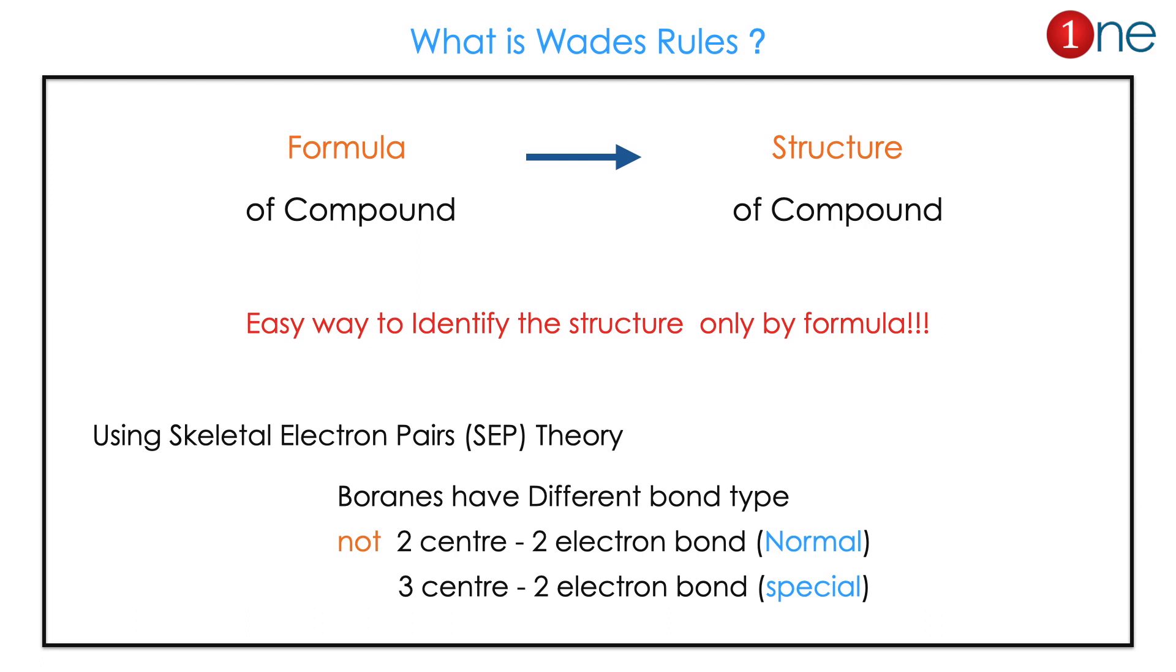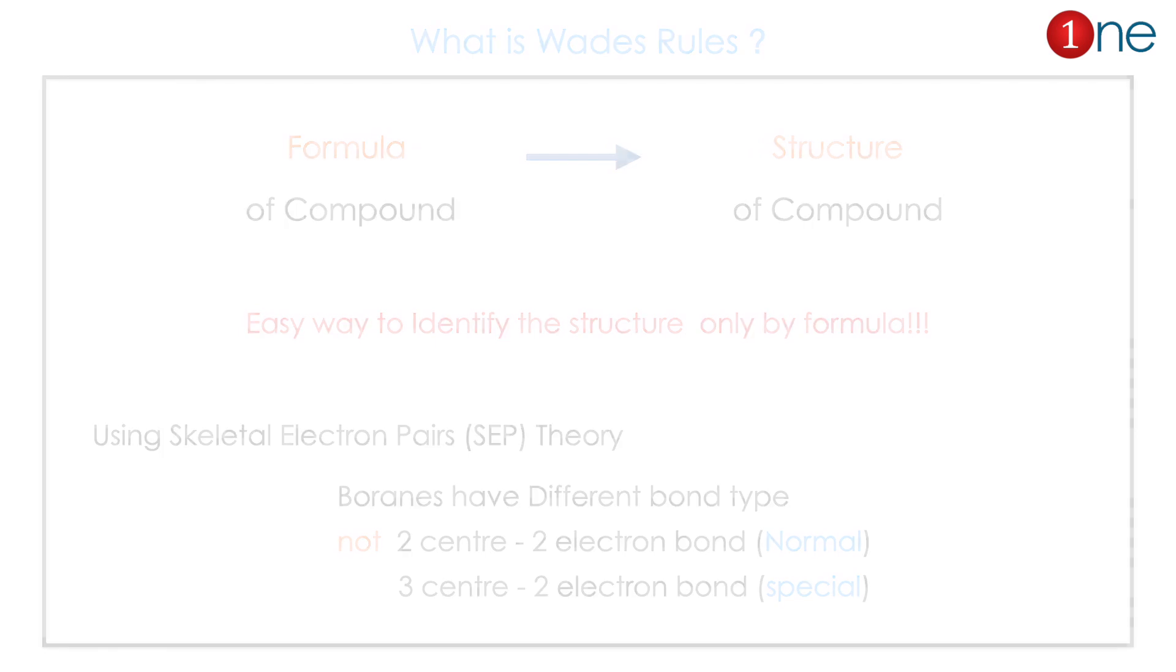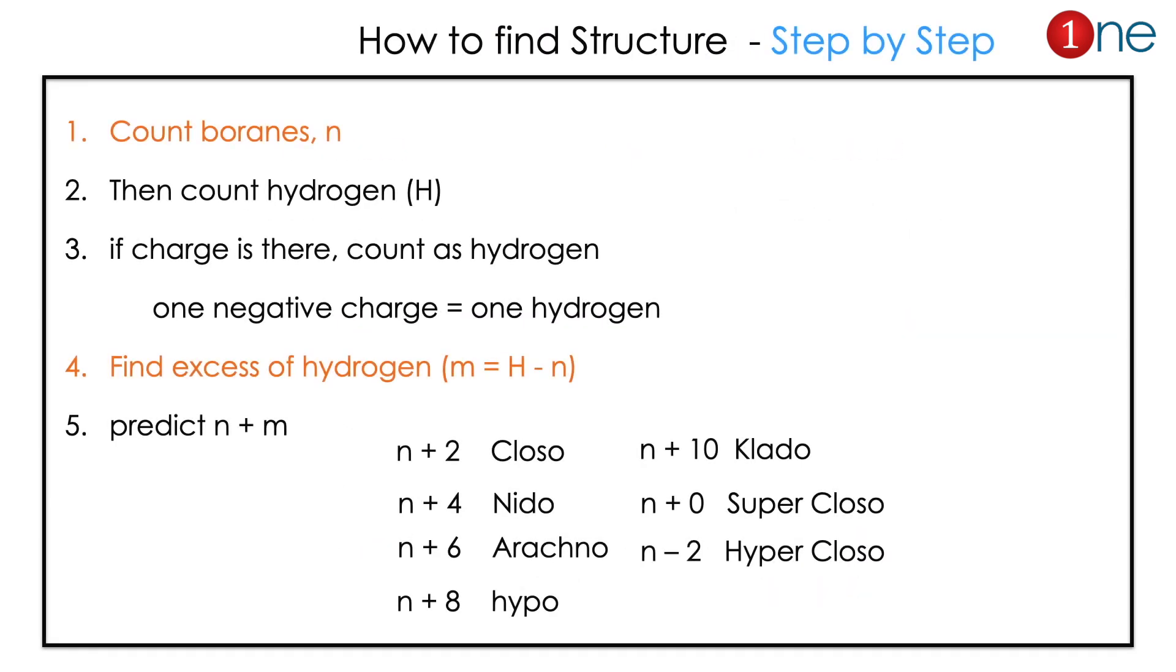How can you find the structure? First, you have to count the boranes (n). Then you have to count the hydrogen (H). Then the important thing: if you have negative charge, you have to count as extra hydrogen.